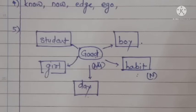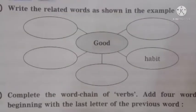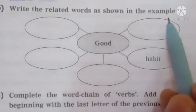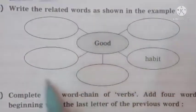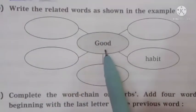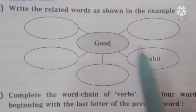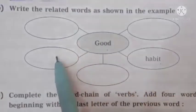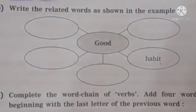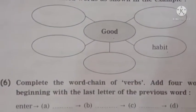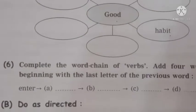Let's have a quick look at the question paper. The instruction says: 'Write the related words as shown in the example.' The example given is: good — adjective — habit — noun. So the pattern is adjective and noun. All the answers here should be nouns. Now the last activity — sixth activity.